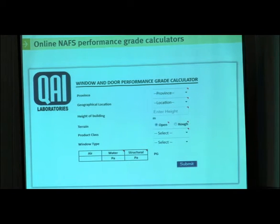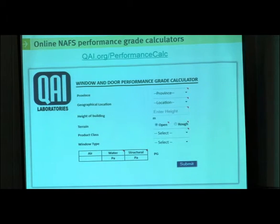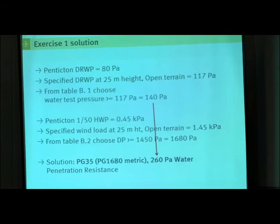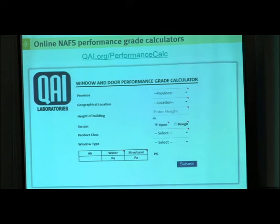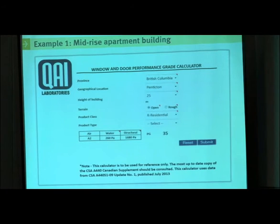QAI Labs in BC has a calculator — search for QAI and performance grade calculator online. You can input values: pick your province, location, height, terrain, product class, and it does the calculations for you. For the previous example — 25 meters, open terrain, residential — you need a PG-35 and a water penetration of 260.